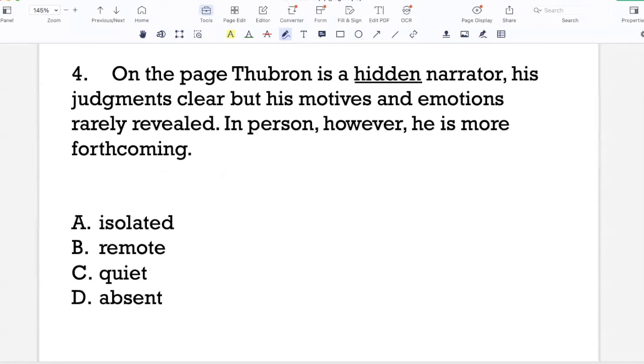So here I'm talking about an author, Thubron, and the difference between his life on the page, his life as an author and his personal self. So when he writes, he is a hidden narrator. That is to say that you're not always able to glean his motives and emotions. Those are not clearly revealed. But when you meet him in person, he's a more forthcoming and forthright person.